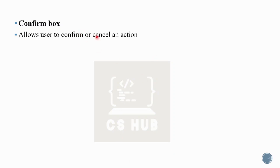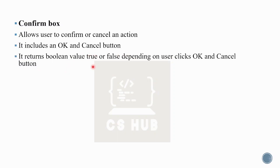Next is the confirm box. It allows the user to confirm or cancel an action. It includes both an OK button and a Cancel button. It returns a boolean value — true or false — depending on what the user clicks. If the user clicks OK, it returns true; if the user clicks Cancel, it returns false.